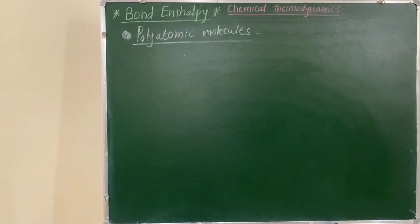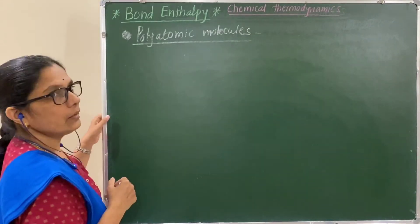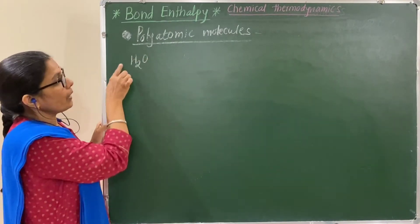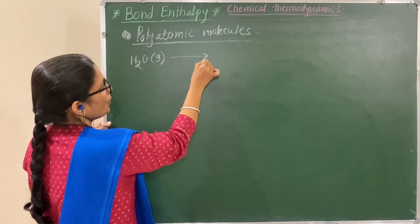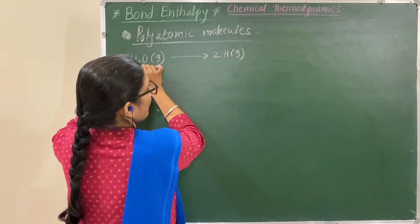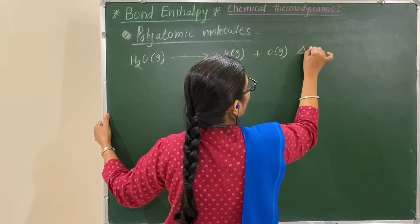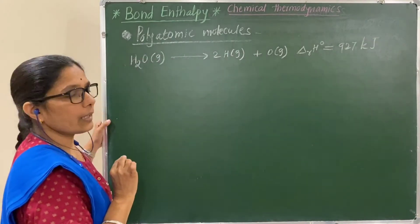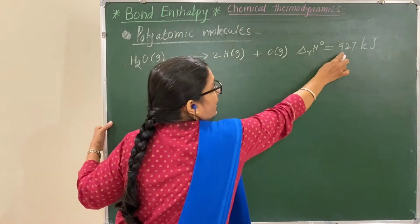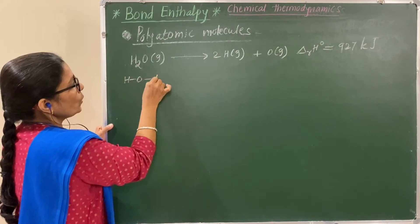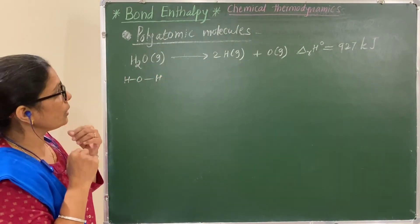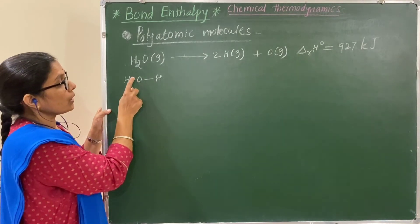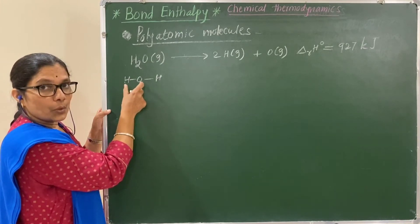Consider the example of water. Water in the gaseous state decomposes into two hydrogen atoms and one oxygen atom in the gaseous state. The change in enthalpy for this reaction is 927 kilojoules. This much energy is required to break the two O–H bonds in the water molecule. Actually, these two O–H bonds are identical, but the enthalpy change — the energy required to break each bond — is different for each.